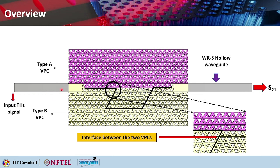This is the connector — the input terahertz signal. This is S21 that shows transmission, and this is a waveguide port. These two are basically WR3 hollow waveguides, and this is your terahertz topological photonic based passive device — basically the waveguide you have designed. You can clearly see that we are using two different colors for VPC type A and VPC type B.